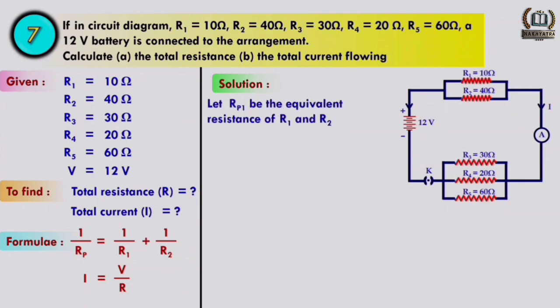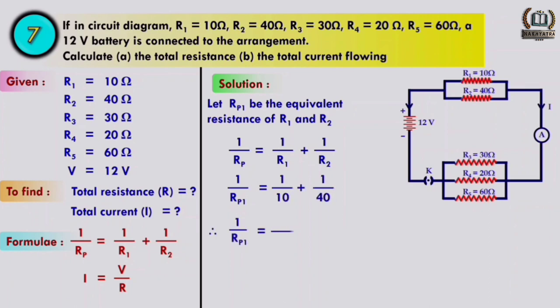Let Rp1 be the equivalent resistance of R1 and R2 in parallel. Putting in the values and solving, we get Rp1 = 8 ohm.